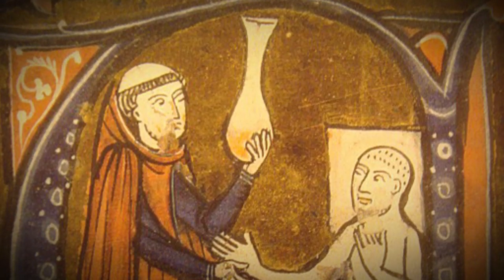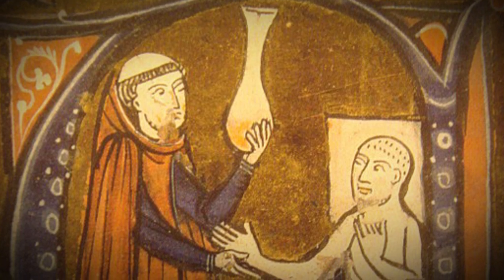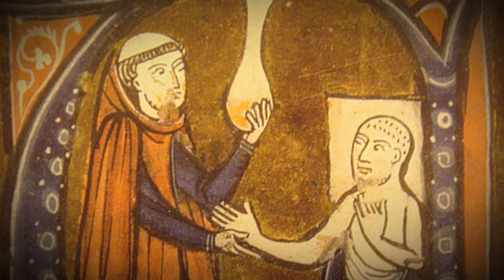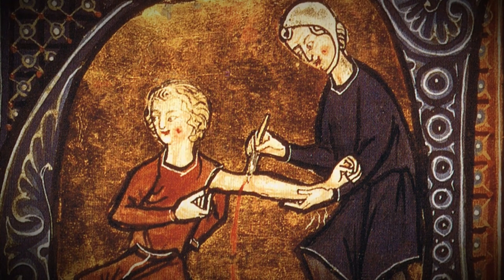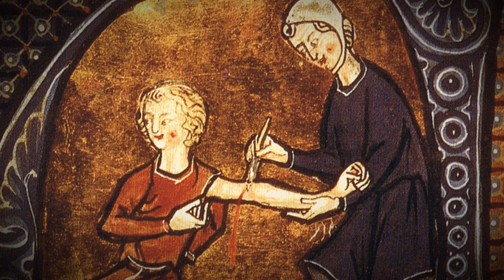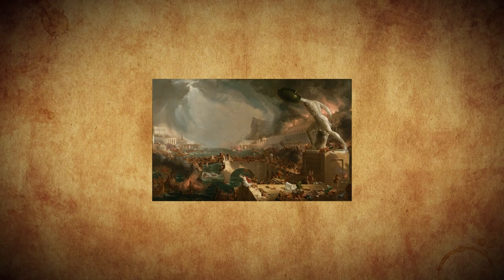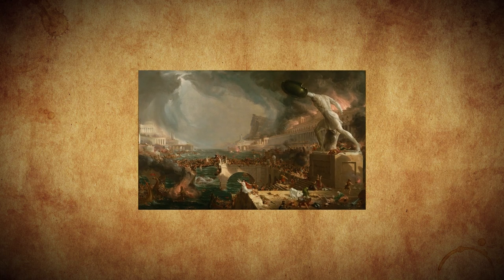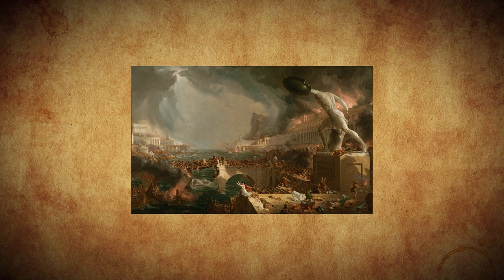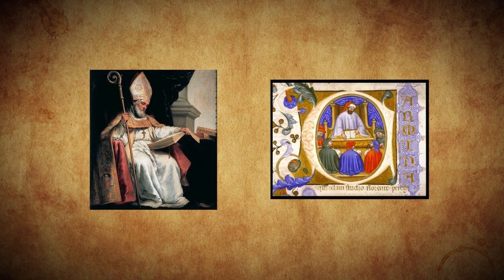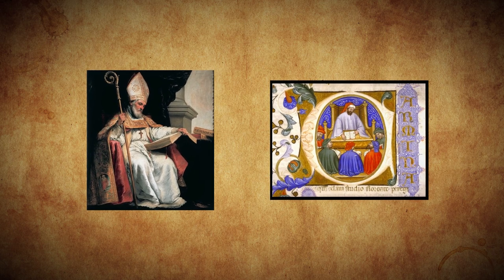The history of medicine is in several aspects different from other parts of the history of science, since it not only covers theories and methods, but also the history of how medicine was practiced, as well as medical institutions. Similar to other aspects of the history of science, much of the ancient medical writings were lost in Western Europe following the fall of the Western Roman Empire, with only a few parts being preserved by the Latin encyclopedists that were covered in part 1 of the series.